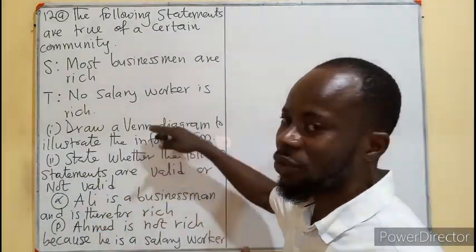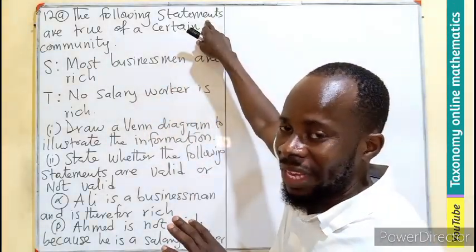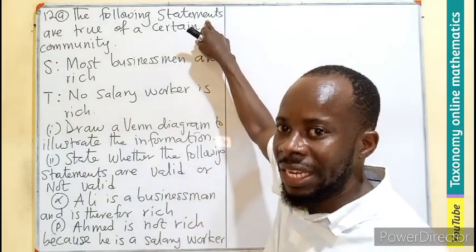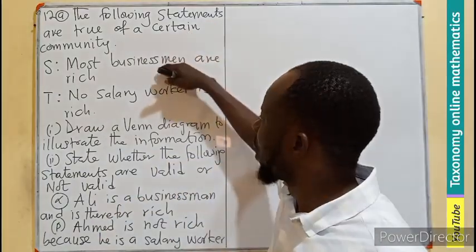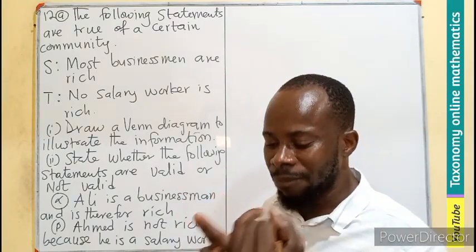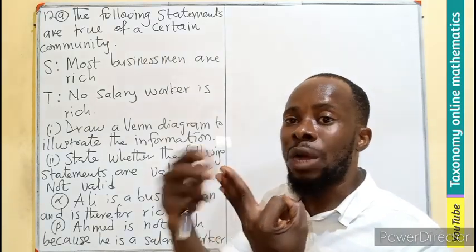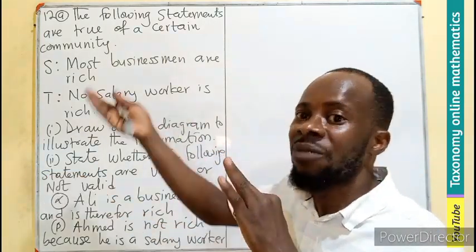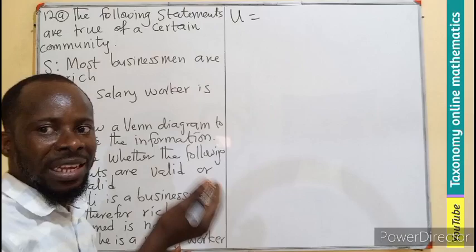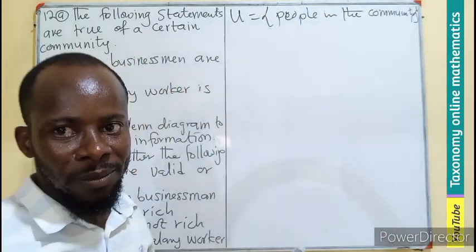Let's begin with the illustration. For you to be saying that a statement is either valid or not valid, there are only two things. A statement could either be valid or not valid. If you are to draw that on a Venn diagram, you need to indicate your universal set as the first thing, indicate the subsets in the question and try to see if you can get a complement.